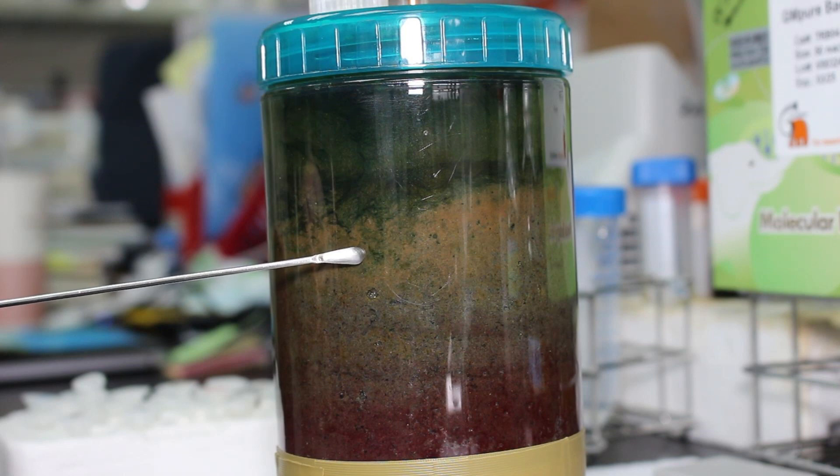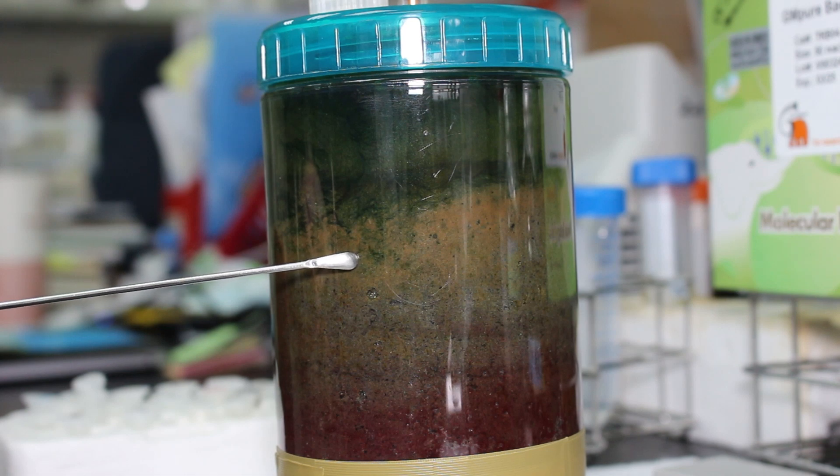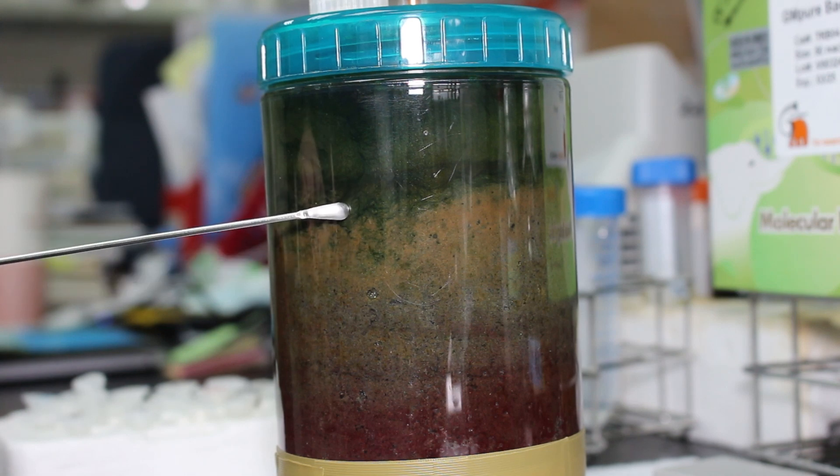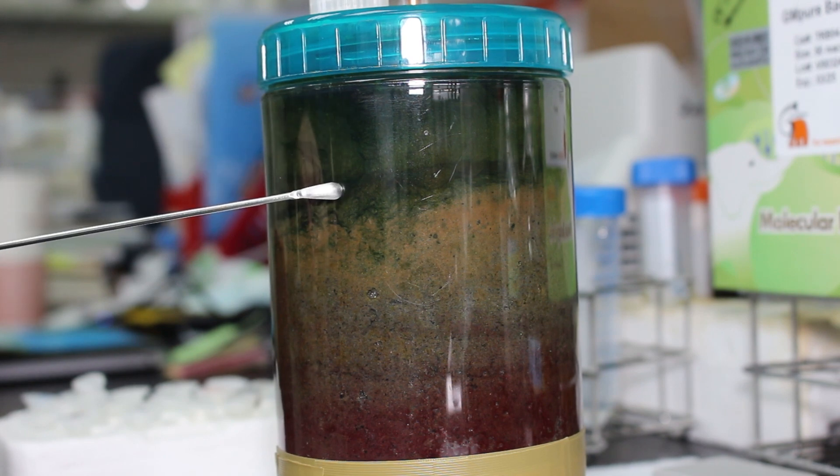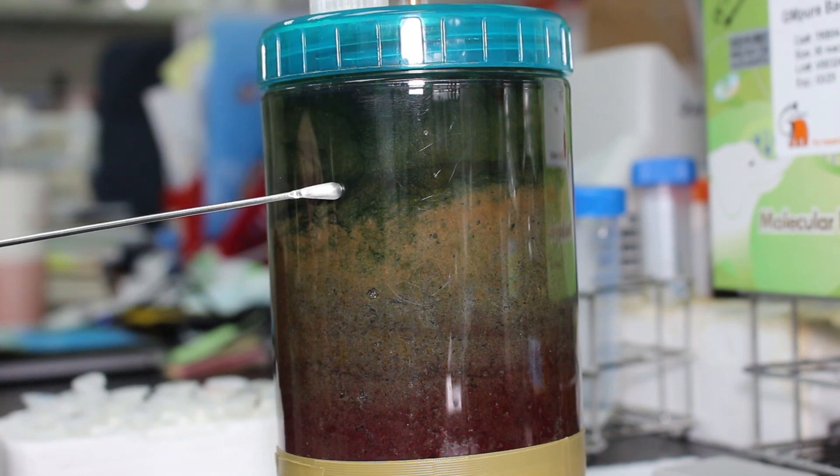So in this layer is kind of all mixed together, all kinds of bacteria. Above that, you can see it's basically green. Those green would be algae and cyanobacteria, which are both organisms that are very good at producing oxygen. So the oxygen level at this green layer or even the water above the mud actually has quite a higher concentration of oxygen.